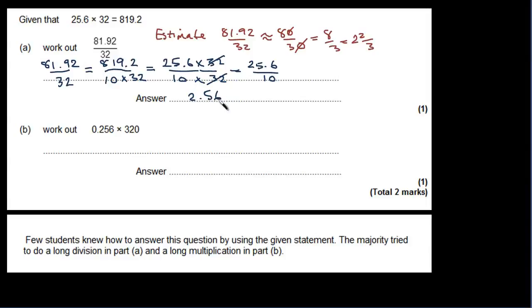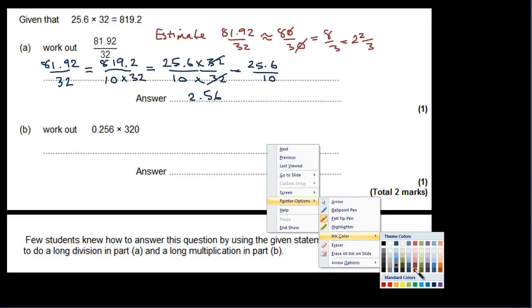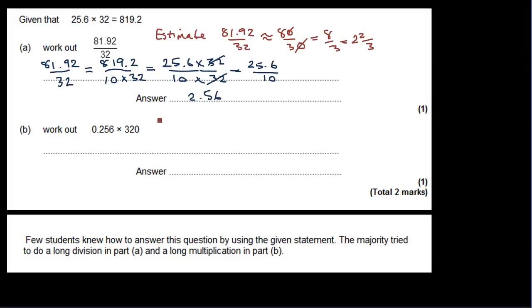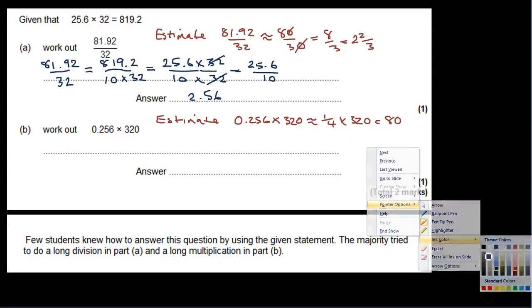Okay, now the second part here is going to be more or less the same method but slightly trickier. Let's start with our estimate. What do we think this is going to turn out to be? We've got 0.256 times 320. Well, that's going to be pretty close to 0.25, which is a quarter, so I'm going to say it's approximately equal to a quarter times 320, in other words 320 divided by 4, which is going to give us 80. Great, now we can tackle the problem.